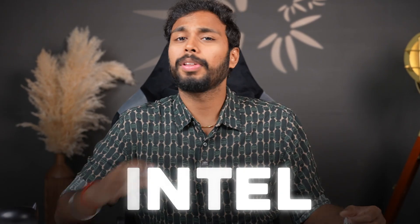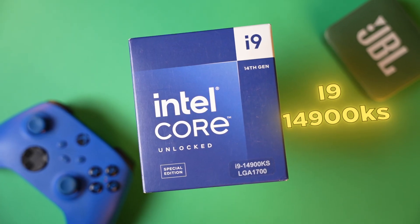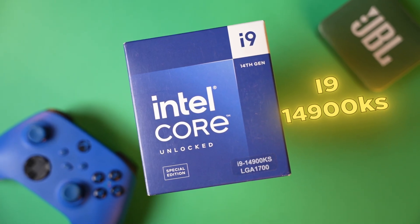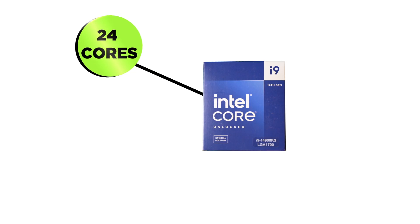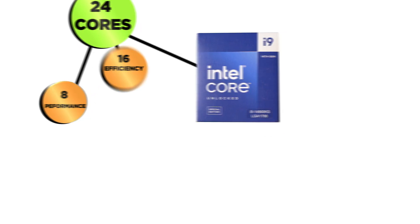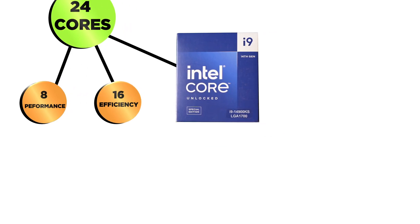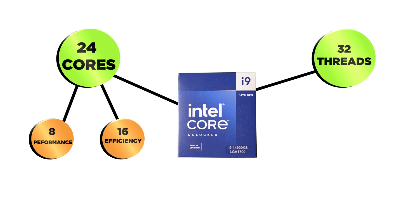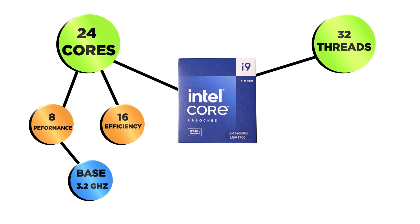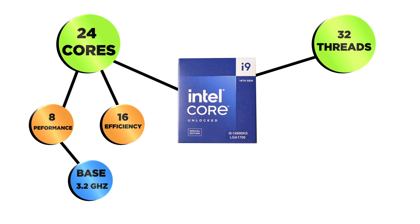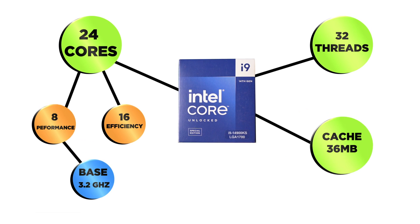We're going with Intel. The processor is the i9-14900KS. In total, there are 24 cores — 8 performance cores and 16 efficiency cores. There are 32 threads. The base frequency is around 3.2 GHz and the cache memory is 36 MB. This is the highest-level processor in the 14th Gen lineup.